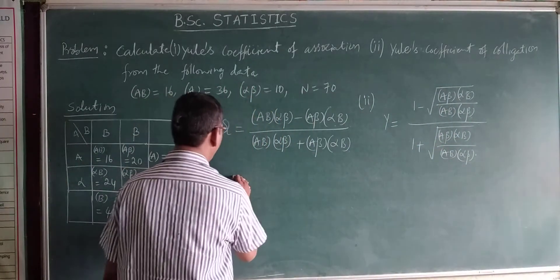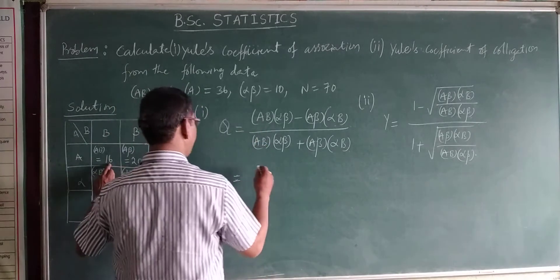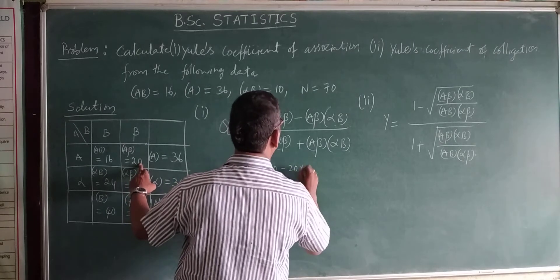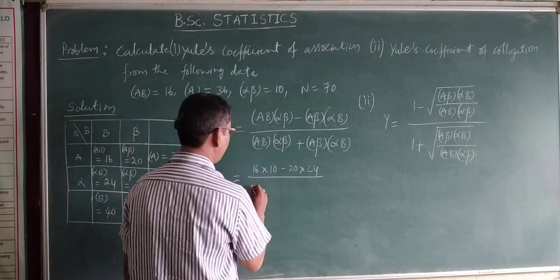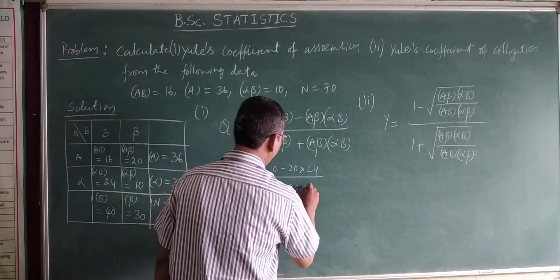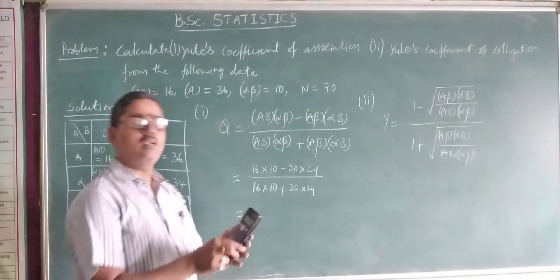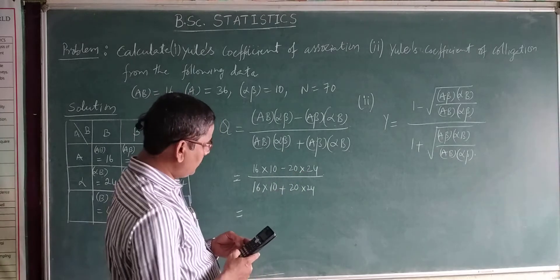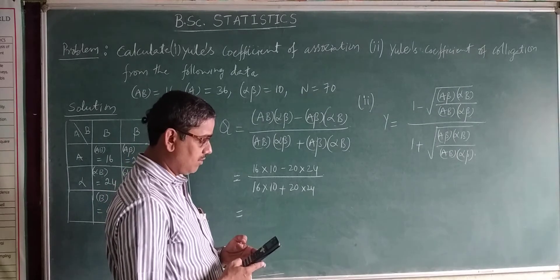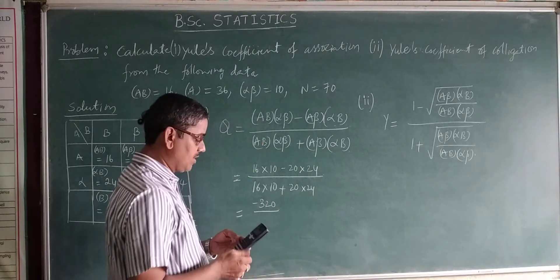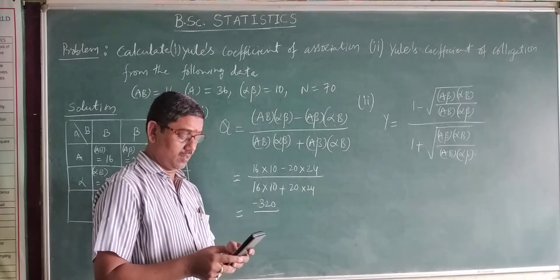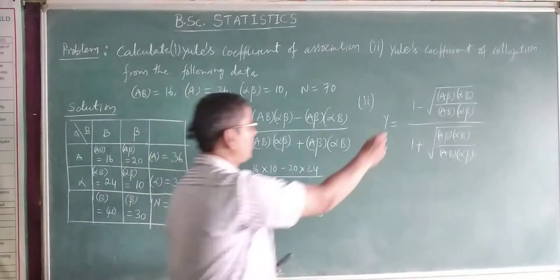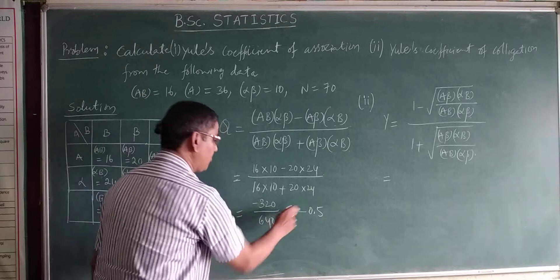Calculating Yule's coefficient of association Q: ab is 16, alpha-beta is 10, a-beta is 20, alpha-b is 24. So Q equals (16×10 minus 20×24) divided by (16×10 plus 20×24), which is (160 minus 480) divided by (160 plus 480), giving minus 320 divided by 640. Therefore, Yule's coefficient of association Q is equal to minus 0.5.